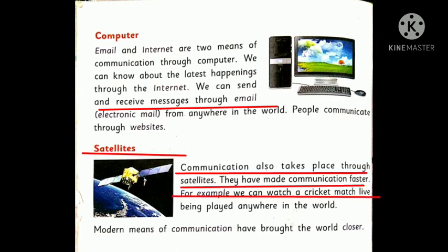The last means of communication are satellites. Communication also takes place through satellites and they have made communication faster. Through satellites we can communicate with people living anywhere in the world. For example, we can watch a cricket match live being played anywhere in the world. We get all information about events happening worldwide on television because of satellites, which have made the communication system faster and easier.